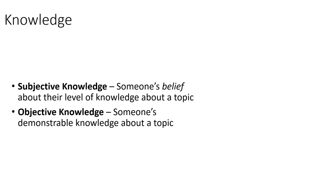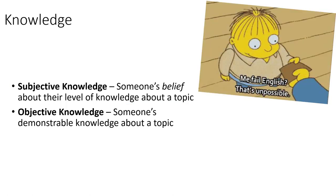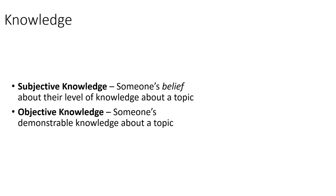Marketing researchers often collect information about a consumer's knowledge as well. It's important to keep in mind that there are two types of knowledge we're often interested in measuring — sometimes both, sometimes just one, depending on the situation. First, there's subjective knowledge — this is someone's belief about their level of knowledge about a topic. It's not actually what they know, but how much they think they know. Objective knowledge is someone's actual, demonstrable knowledge about a topic. It's important to separate these two concepts.